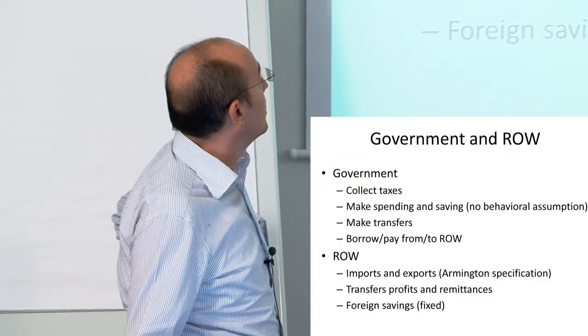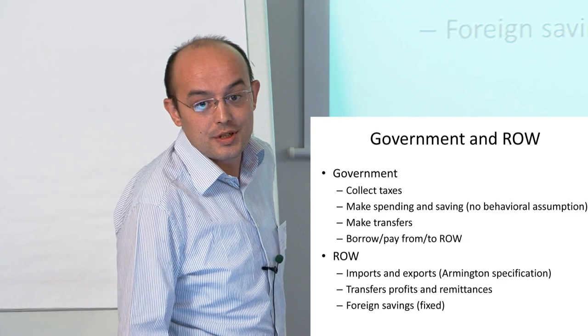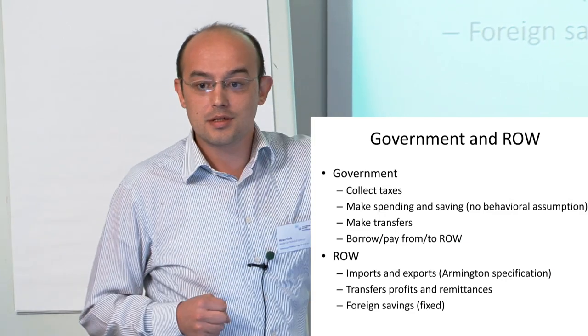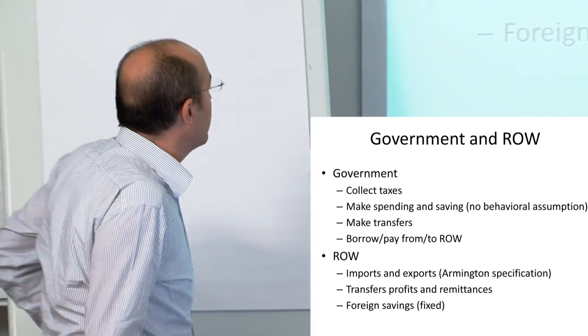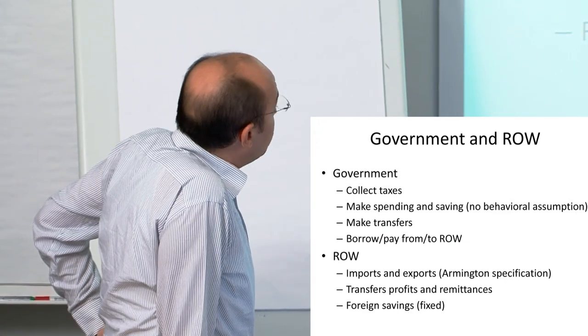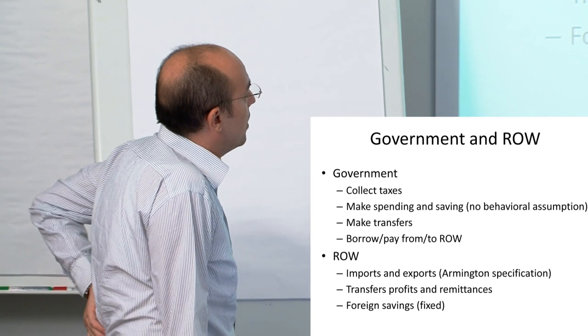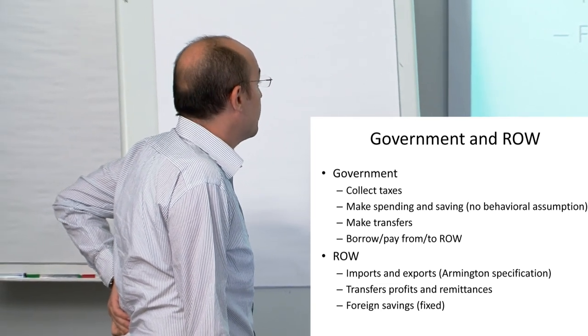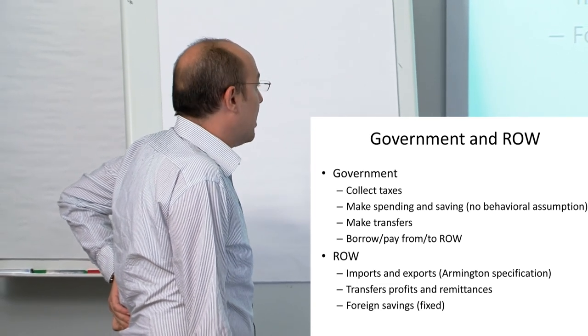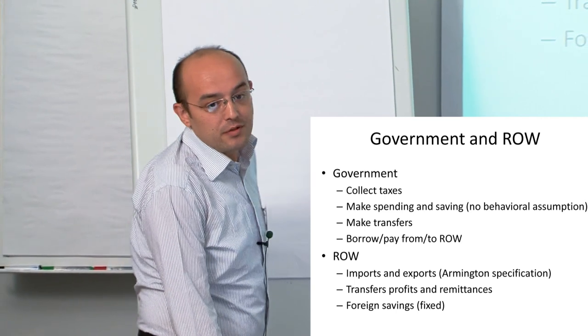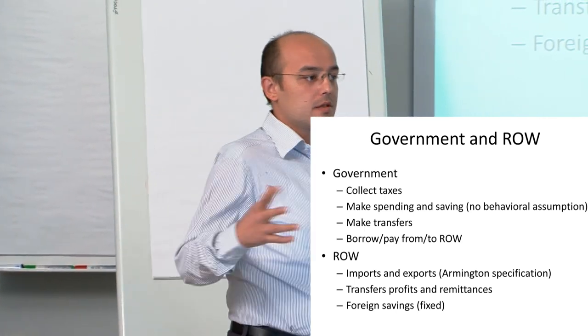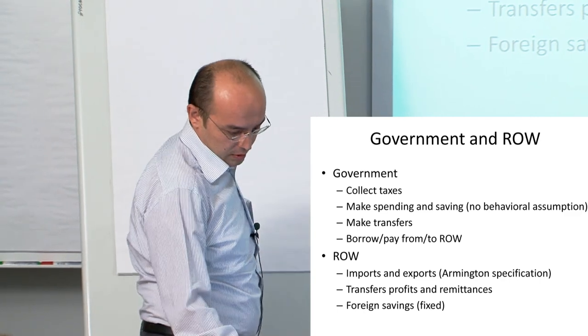The government doesn't have any objective function. It's just collecting taxes and making spendings with constant shares. For the rest of the world, imports and exports are specified using Armington specification. They just buy and sell goods to and from the country.